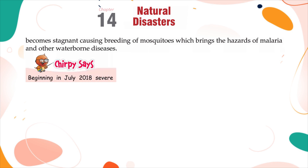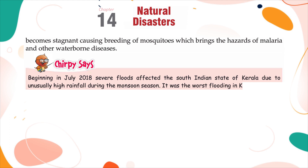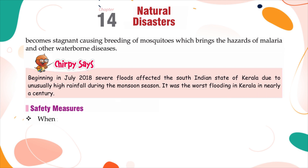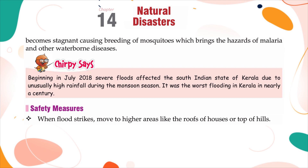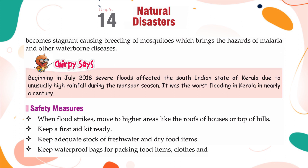Beginning in July 2018, severe floods affected the South Indian state of Kerala due to unusually high rainfall during the monsoon season. It was the worst flooding in Kerala in nearly a century. Safety measures: when flood strikes, move to higher areas like the roofs of houses or top of hills. Keep a first aid kit ready, adequate stock of fresh water and dry food items, and waterproof bags for packing food items, clothes and important documents.